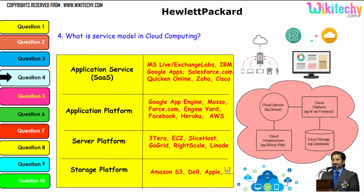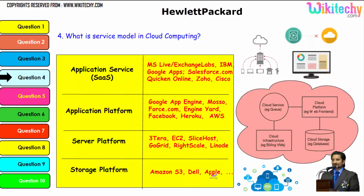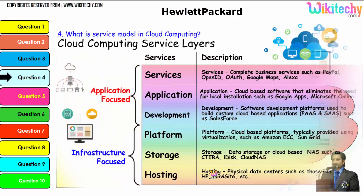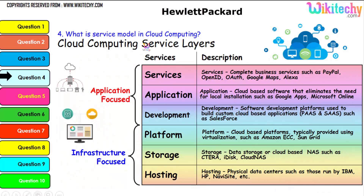The important service layers are: services, application development, platform, storage, and hosting. Typical examples include application services, application platforms, server platforms, and storage platforms provided by Amazon S3, Dell, and Apple. These are important services that will be asked about in cloud computing interviews.